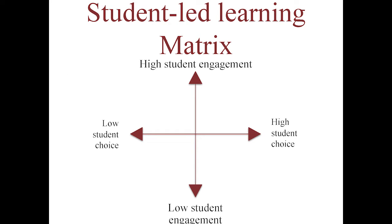I want to start out by setting up a very simplistic student-led learning matrix to try and help define what student-led learning is. You can think of one spectrum going from passive learning to active learning, and one spectrum going from a low level of student agency to a high level of student agency. By student agency, I mean something like student choice over what the topics are that are being covered and what they're working on.